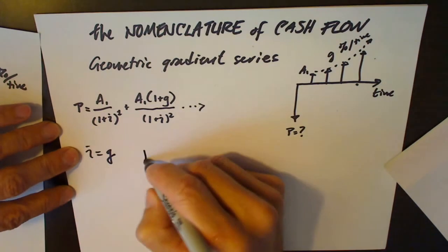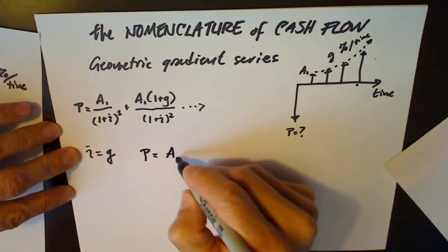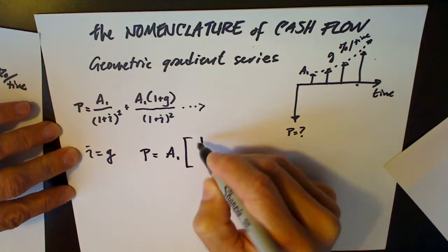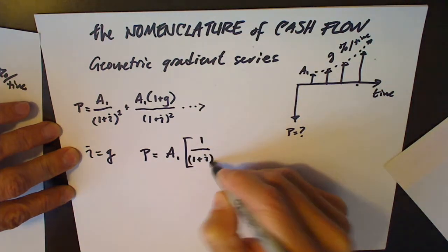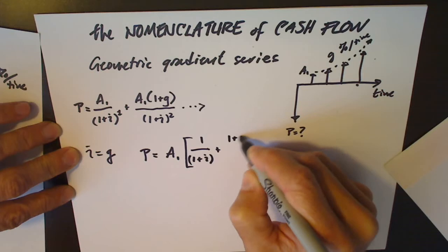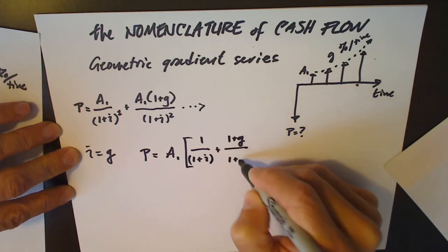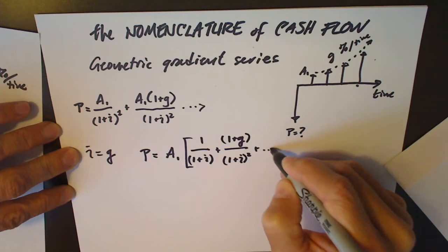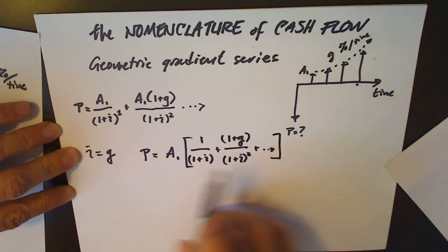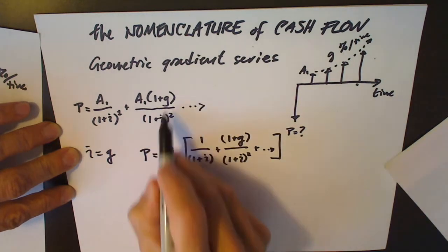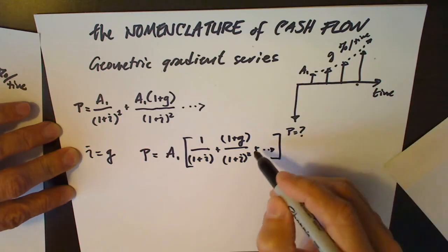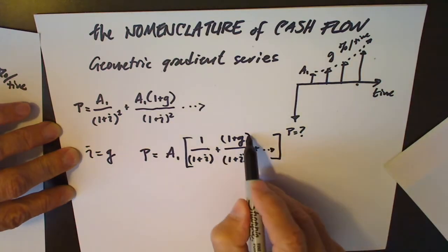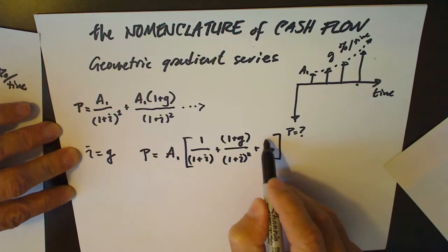To P equals A₁ one over one plus I squared when G and I are equal. You can see that we have one plus I here, one plus G here, one plus I squared here, one plus IG squared.